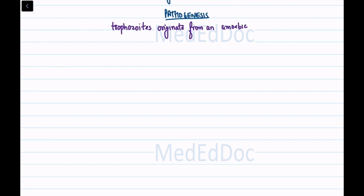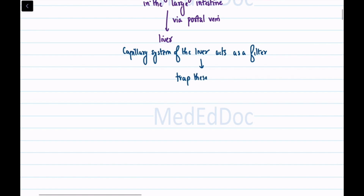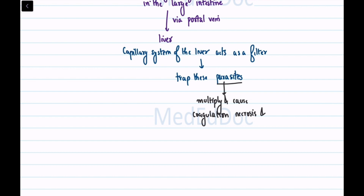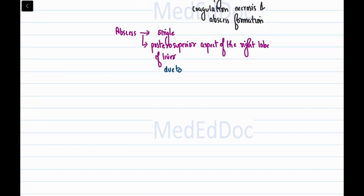Pathogenesis of amoebic liver abscess: The trophozoites of E. histolytica, originating from an amoebic ulcer in the large intestine, are carried through the portal vein and reach the liver. The capillary system of the liver acts as a filter, trapping these parasites, where they multiply and cause coagulation necrosis and abscess formation. Typically, the abscess is single and localized in the posterosuperior aspect of the right lobe of the liver, due to the blood flow pattern in the portal vein.